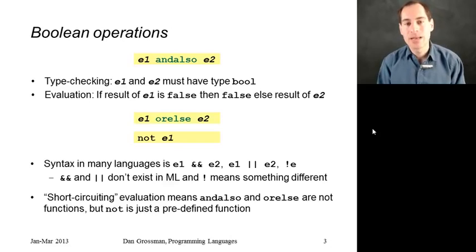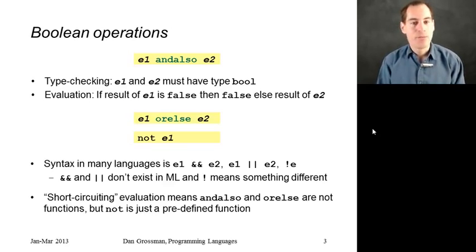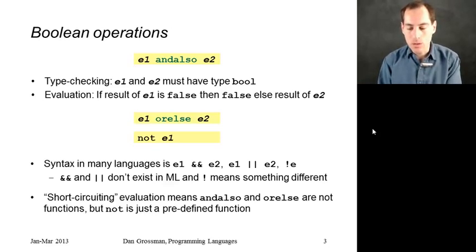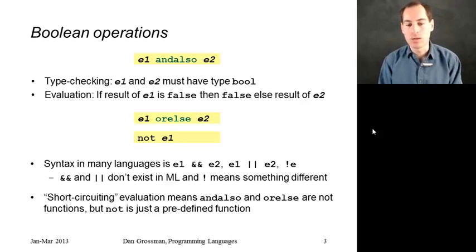The syntax in most languages is different: && for and, || for or, and ! for not. If you try those in ML, they're not going to work. && and || don't mean anything, so you'll get a syntax error. The exclamation point actually means something totally different related to mutation, which we might see at the very end, so you'll get a stranger error message.